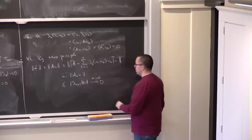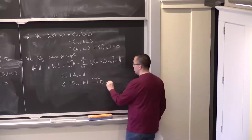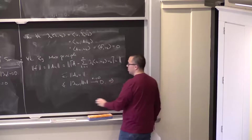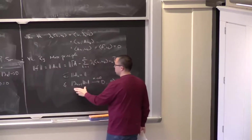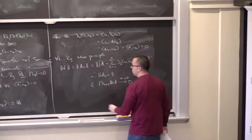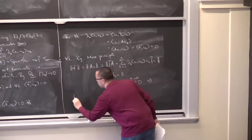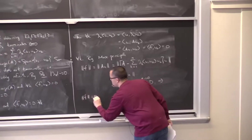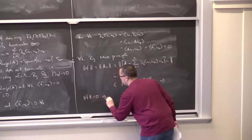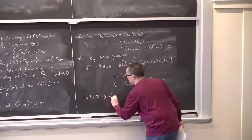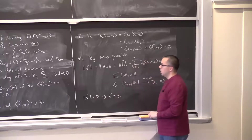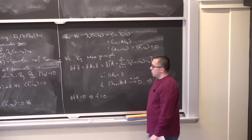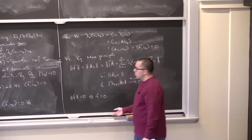Since ‖f‖ is a fixed non-negative number bounded above by |λₙ₊₁| · ‖u‖, and |λₙ₊₁| → 0, we conclude ‖f‖ = 0, so f = 0. This proves that {uₖ} is a maximal orthonormal subset of the range of A, hence an orthonormal basis for the closure of the range of A.